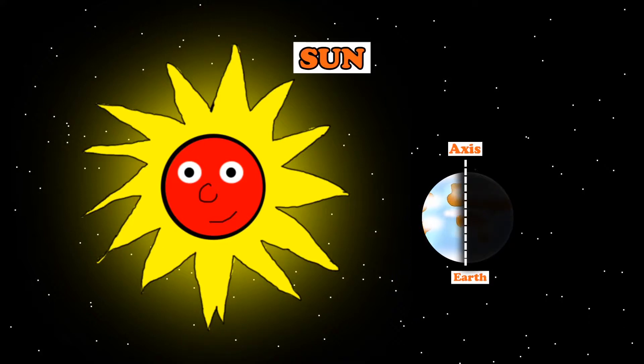If you're on the side that's facing the sun and has light, it's daytime. While if you're on the other side that's facing away from the sun and is dark, well, you might have guessed it, it's nighttime.